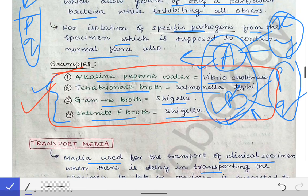Both the examples of transport media and the examples of enrichment broth are very important. Next, we will talk about differential media in the next lecture, which will also be a very important lecture on culture media.